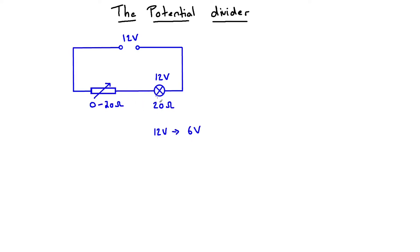We can't vary the PD across the filament lamp down to zero with that circuit. What we could do is adjust the circuit. A variable resistance actually has three contacts: a sliding contact and two fixed contacts at the bottom. We can make use of all of those contacts to produce a variable potential divider.